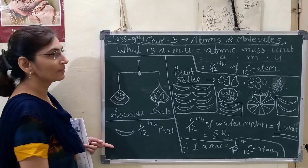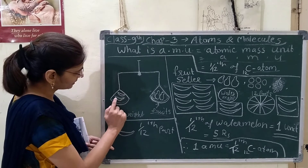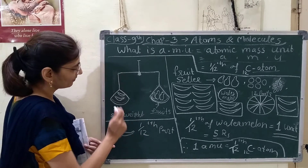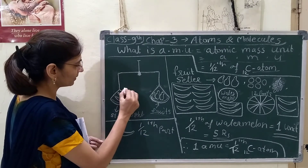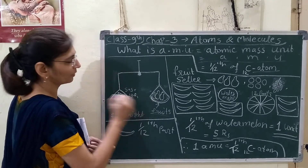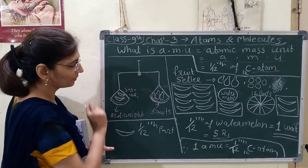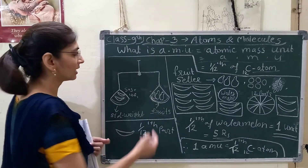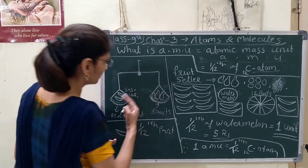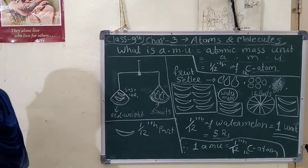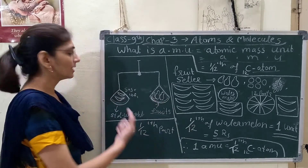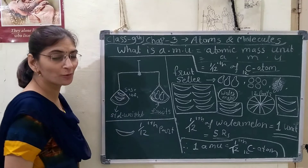Gawa fruit is heavier, so he needed more watermelon pieces — 2 pieces, meaning 5 rupees plus 5 rupees equals 10 rupees. Three gawa fruits compared to 2 watermelon pieces gives a price of 10 rupees. This is how we take relative atomic mass — in relation to a standard, just like with the fruits.